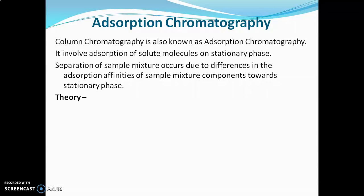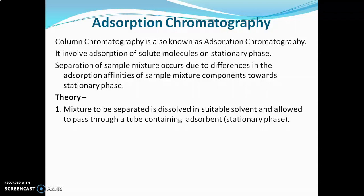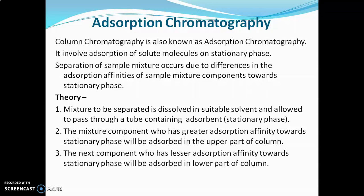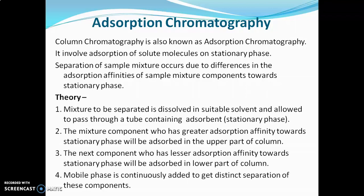Now we will go for the theory of adsorption chromatography. The mixture to be separated is dissolved in a suitable solvent and then allowed to pass through a tube containing adsorbent, that is the stationary phase. The component with greater adsorption affinity towards the stationary phase will be adsorbed in the upper part of the column, and the component with lesser adsorption affinity will be adsorbed in the lower part. The mobile phase is continuously added to get distinct separation of these components.